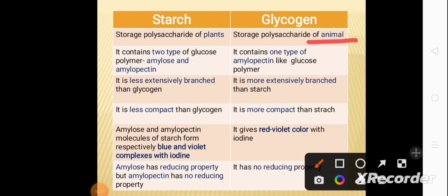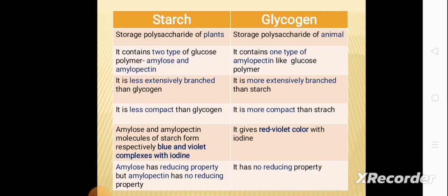Starch contains two types of glucose polymers: amylose and amylopectin, whereas glycogen contains one type of polymer, which is an amylopectin-like glucose polymer.